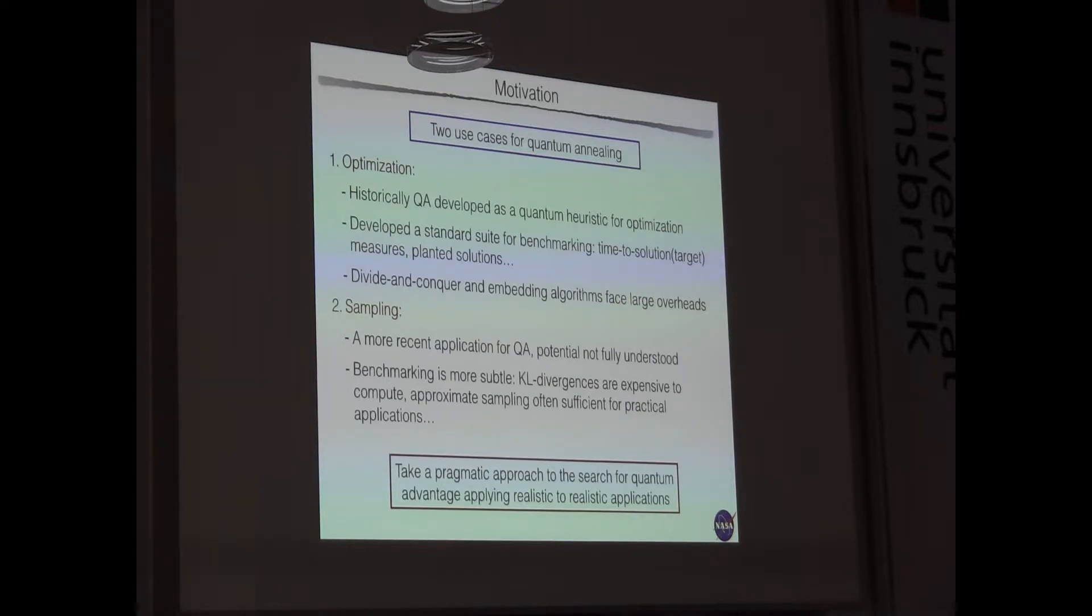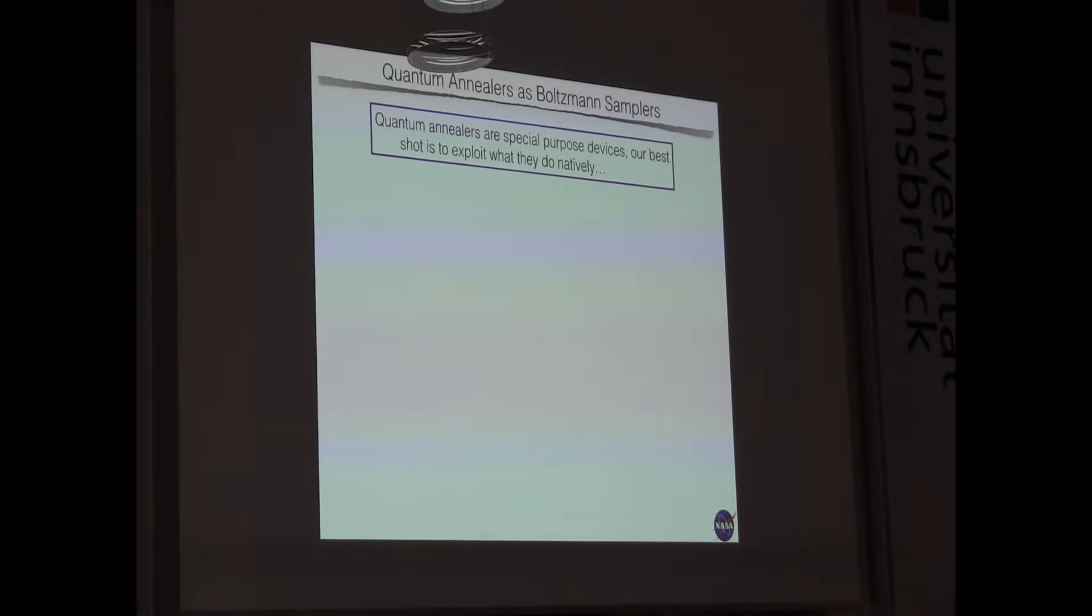And if we can use quantum annealing for sampling application on a real problem, then maybe we can take a more pragmatic approach, and people can just use it and see whether it's better to use a certain algorithm or just stick with other classical techniques. So maybe you take off some of the workload on trying to benchmark and try to understand more theoretical questions. Just use your algorithm and see how it works. Quantum annealers are special purpose devices. Our best shot is to use them at what they do natively, as simulators.